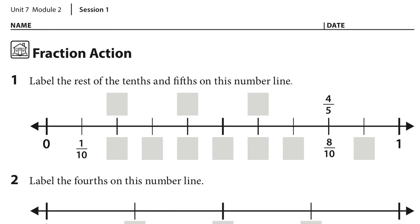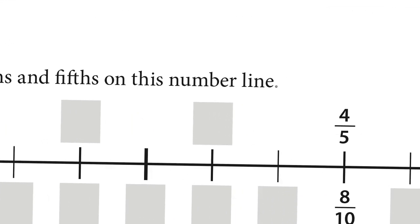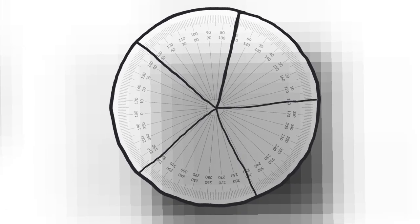Maybe there's something on this page that could help us. I took a 360-degree protractor and I divided it up into fifths. So if I were to shade in one section, this would be one-fifth on this side, and this section over here would be one-fifth, so on and so forth. There are five of them.